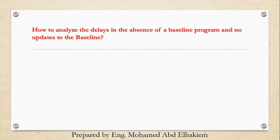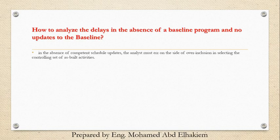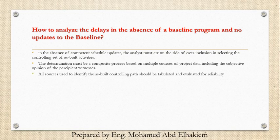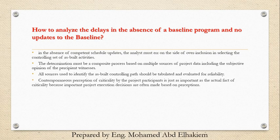How to analyze the delays in the absence of a baseline program and no updates to the baseline? In the absence of competent schedule updates, the analyst must err on the side of over-inclusion in selecting the controlling set of as-built activities. The determination must be a composite process based on multiple sources of project data including the subjective opinion of the percipient witnesses. All sources used to identify the as-built controlling path should be tabulated and evaluated for reliability. Contemporaneous perception of criticality by the project participants is just as important as the actual fact of criticality, because important project execution decisions are often made based on perceptions.